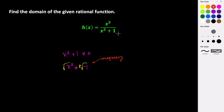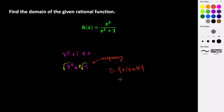This denominator does not have any values that make it 0 in the real numbers. So there's no domain restriction, meaning our domain is all real numbers — the set of all x such that x is an element of the real numbers. In interval notation, it's just everything from negative infinity to infinity.